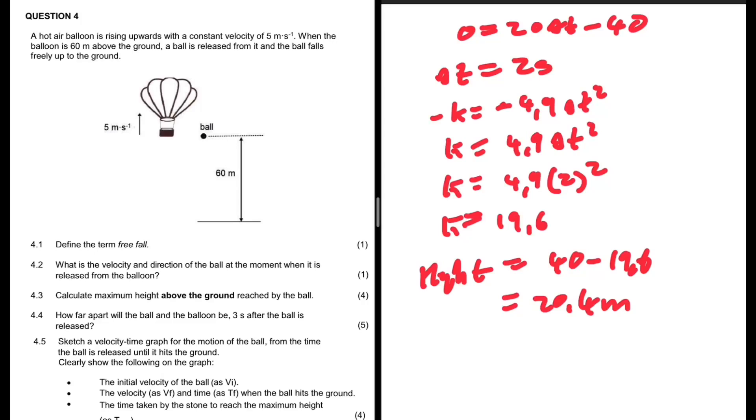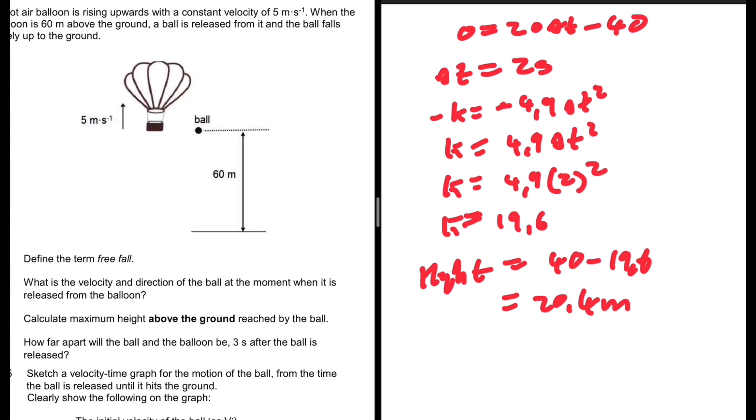A hot air balloon is rising upwards with a constant velocity of 5 meters per second. When the balloon is 60 meters above the ground, a ball is released from it and the ball falls freely up to the ground. Define the term free fall - well, I'm going to let you do that.